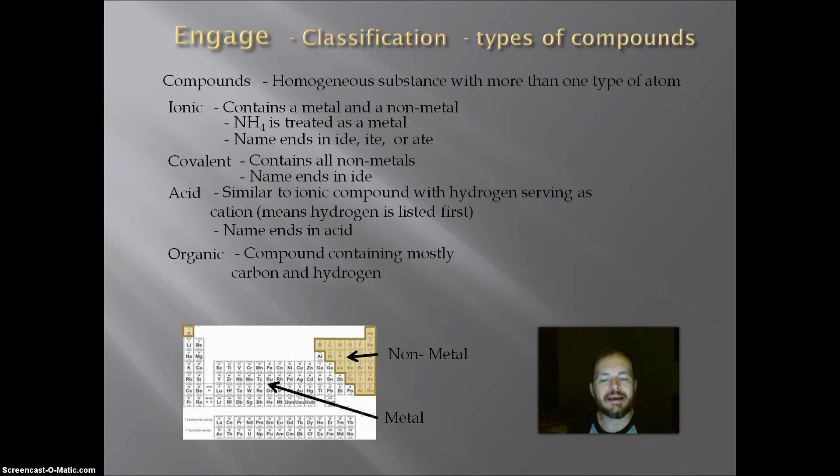And an organic compound is a compound containing mostly carbon and hydrogen. And organic compounds, their names are going to end in ane, ene, yne, or ol.